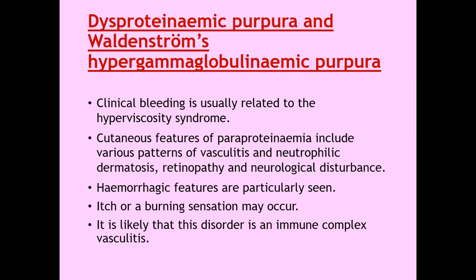Dysproteinemic purpura and Waldenström's hyperglobulinemic purpura. Clinically, bleeding is usually related to the hyperviscosity syndrome in this case. The cutaneous features of paraproteinemia include various patterns of vasculitis and neutrophilic dermatosis, retinopathy, and neurological disturbances. Hemorrhagic features are particularly seen. Itch or a burning sensation may occur. It is likely that this is an immune complex vasculitis, so the basic cause is hyperproteinemia resulting in hyperviscosity that leads to bleeding tendency.